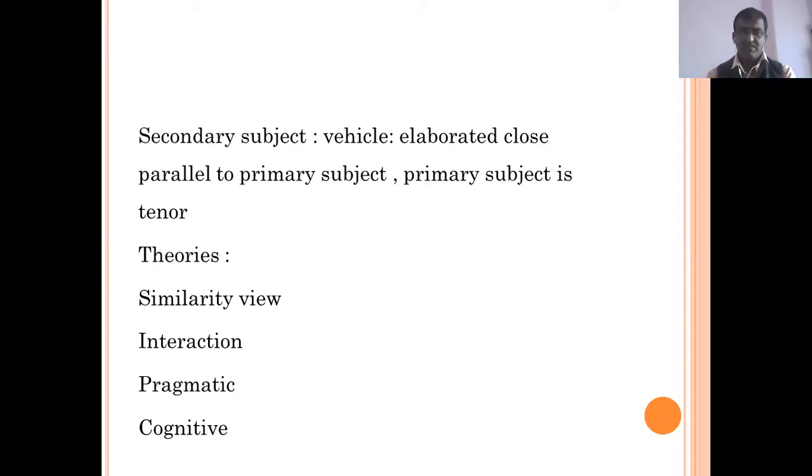We have certain theories in the uses of simile. The similarity view: love and red rose have something similar. Both things have similarity, which brings them close, allowing the poet to establish the parallel.